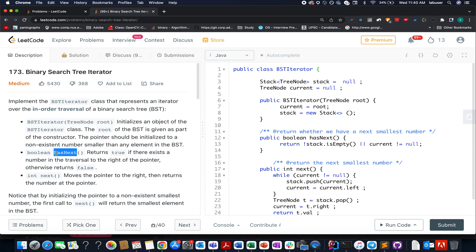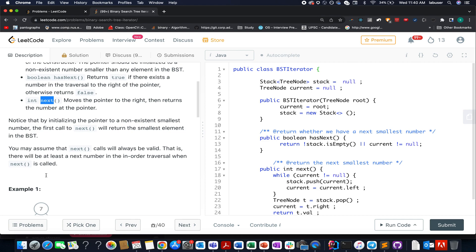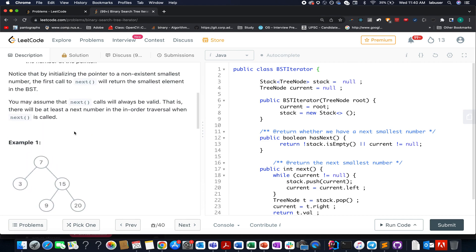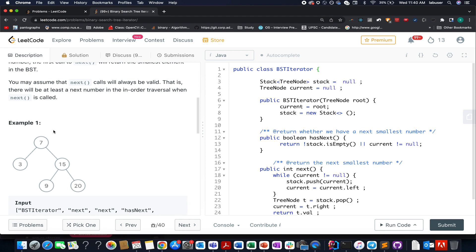The next one is hasnext, it returns whether there are more elements in the BST or not. And the next method simply returns the next number in the iteration of a binary search tree. Pretty simple and straightforward to understand, no rocket science there. I will be walking you through this example as well as the algorithm to go about it while the presentation so let's quickly hop on to it.